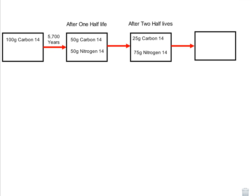After two half-lives, which would be 5,700 plus 5,700 years, which of course would be 11,400 years, 100 grams of carbon-14 would actually be 25 grams of carbon-14 and 75 grams of nitrogen-14.